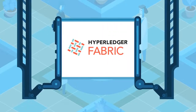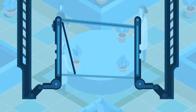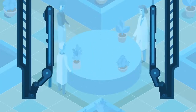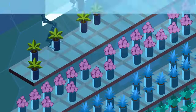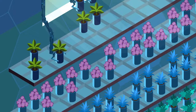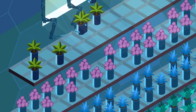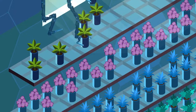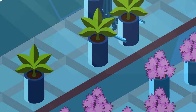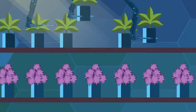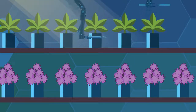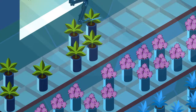Hyperledger Fabric is an enterprise-grade permissioned distributed ledger platform in the Hyperledger Greenhouse that offers modularity and versatility for a broad set of industry use cases. The modular architecture for Fabric accommodates the diversity of enterprise use cases through plug-and-play components such as consensus, privacy, and membership services.